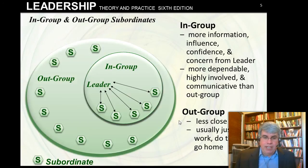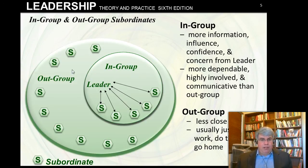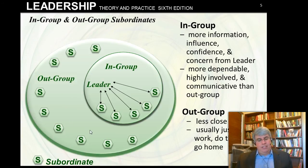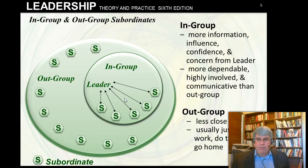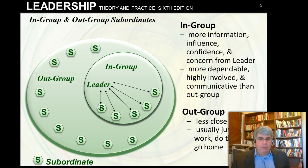The leader has positive, frequent, encouraging interactions with the in-group. The out-group has less interaction with the leader — it's less positive, less close. They come to work to get their job done, and the leader gives them the minimum amount of information. The in-group, by contrast, is closer to the leader, has more information, and there's greater confidence on both sides. Research shows the in-group becomes more dependable, more involved in work, and more communicative than those in the out-group.